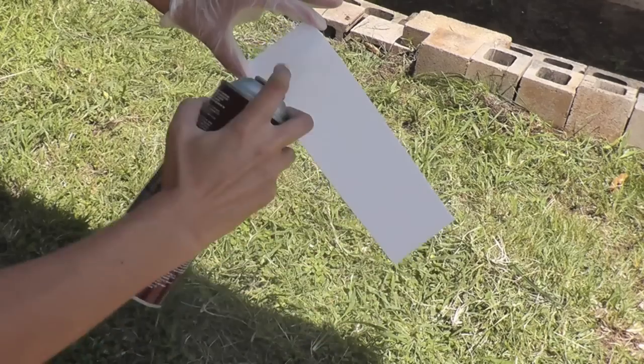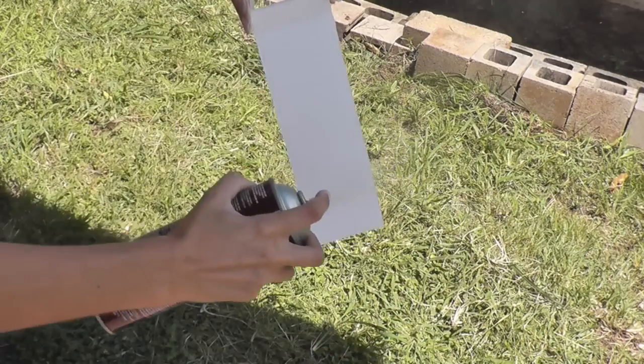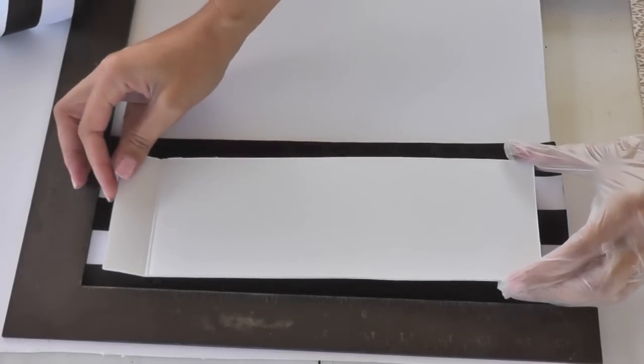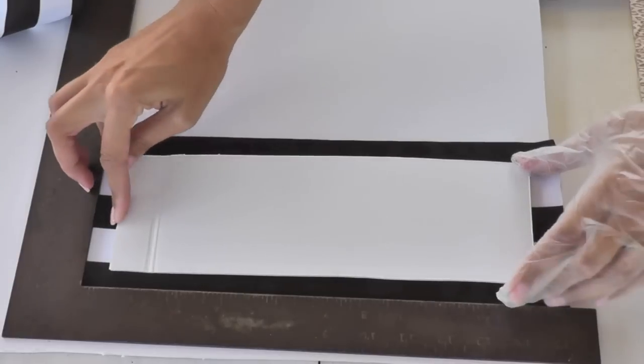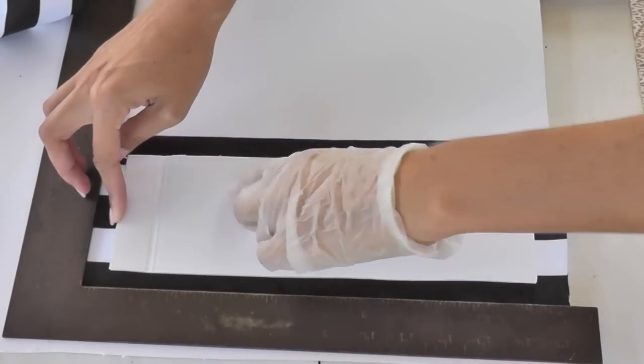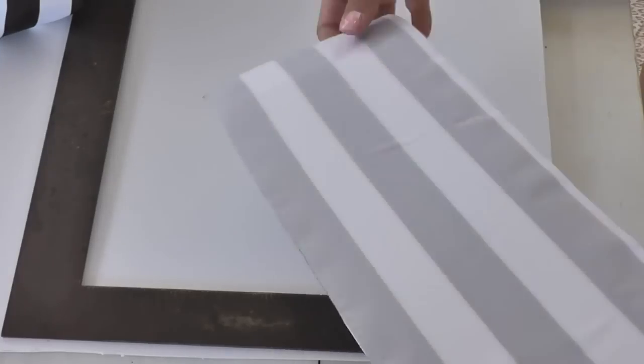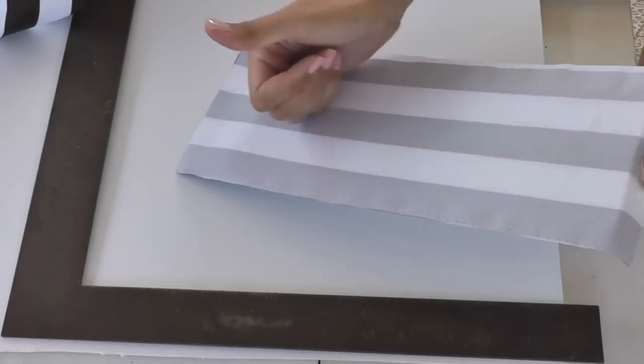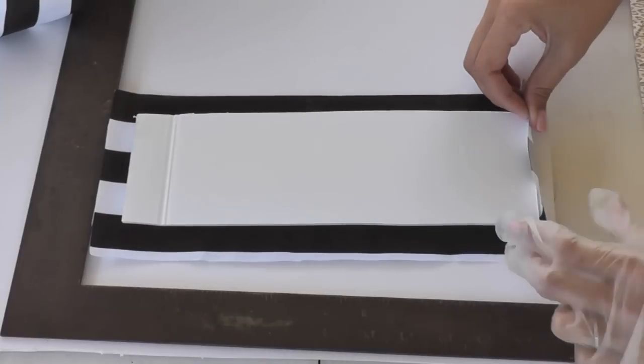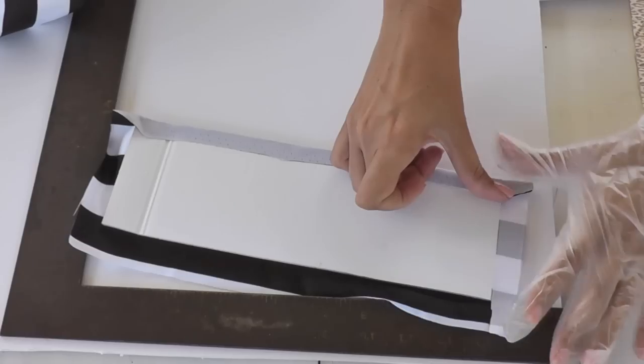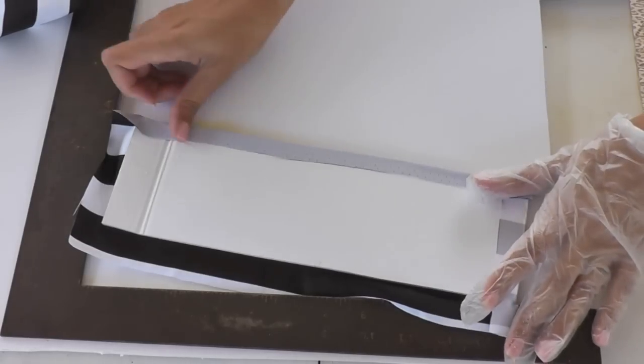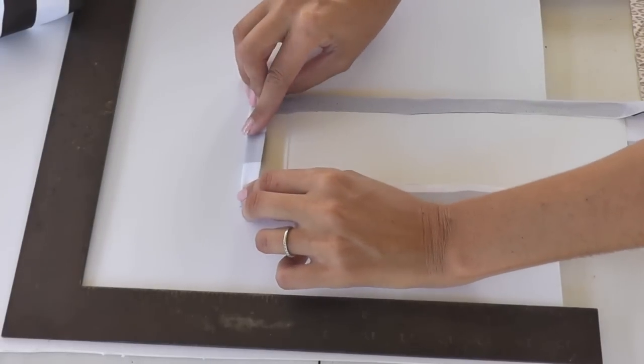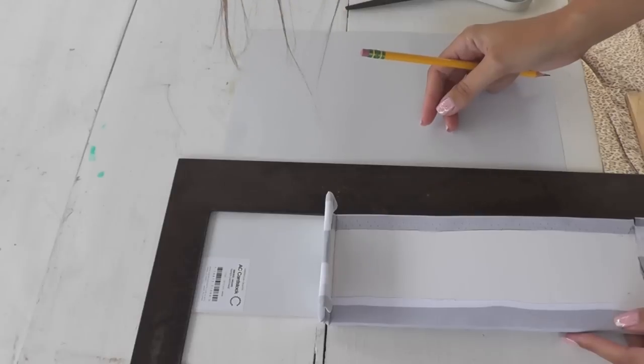I'm going to use my spray adhesive to spray both sides of the foam board. I'm placing the top of my foam board onto the bottom of my fabric, and since I'm using stripes, I'm being very careful to line the stripes up so they're straight. Then go ahead and smooth out any wrinkles. Now I flip over the foam board and it's time to press the edges of the fabric into the back of the foam board. I'm just smoothing out those edges and trying to keep them as clean looking as possible.